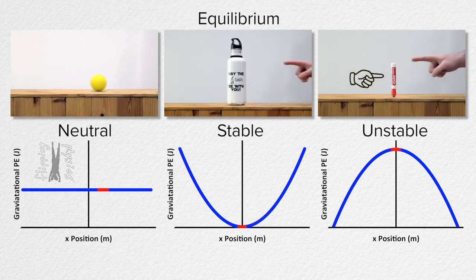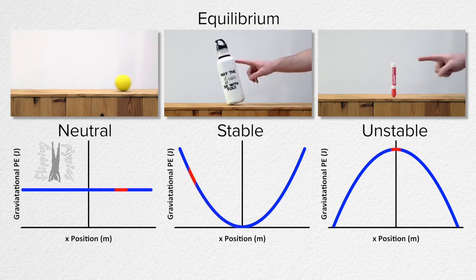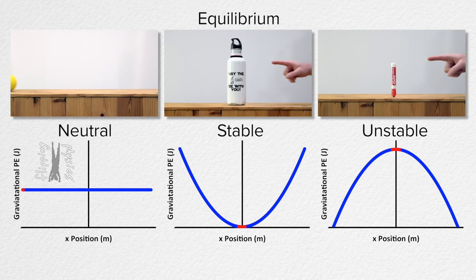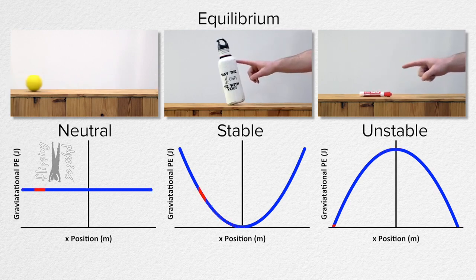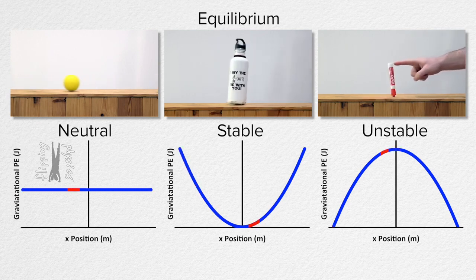This dry erase marker is in unstable equilibrium because its gravitational potential energy decreases as its position moves away from the equilibrium position. This is because the center of mass of the dry erase marker goes down as the position goes away from equilibrium. In other words, the dry erase marker naturally moves away from the equilibrium position when it loses gravitational potential energy.